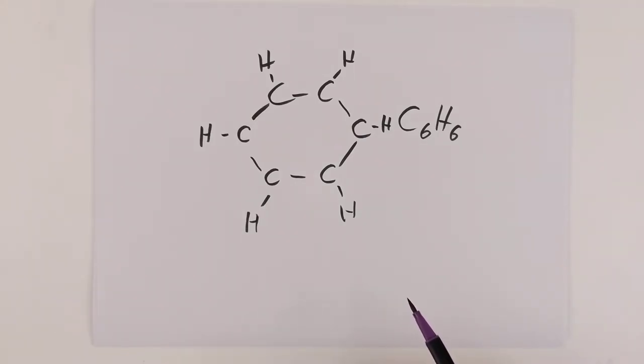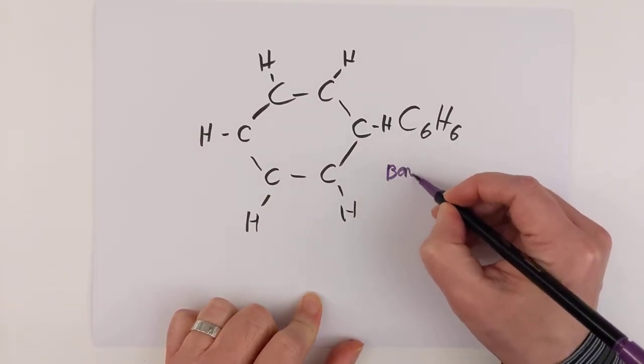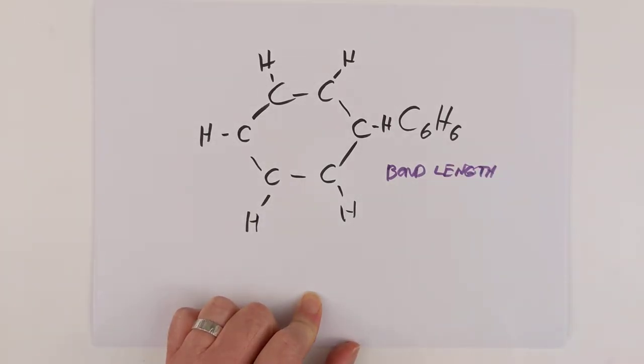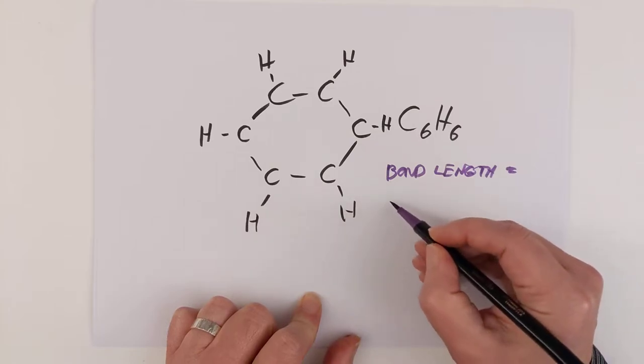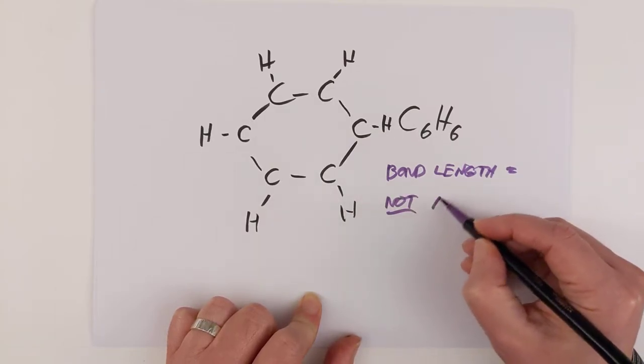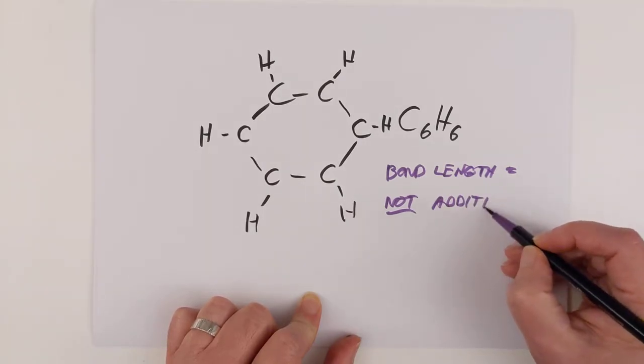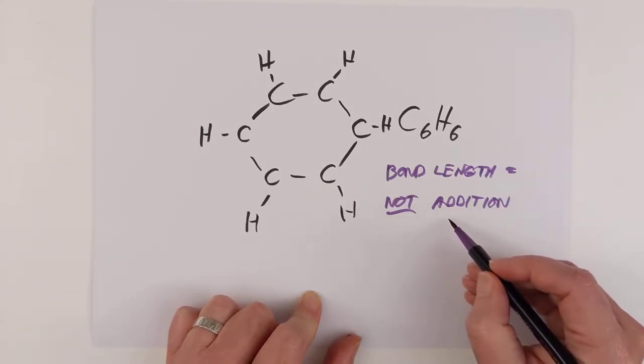Cyclohexatriene would have alternating double and single bonds, which are different lengths to each other. Single bonds are longer than double bonds. So, this is evidence that it's not cyclohexatriene. Other evidence is to do with the fact that if it did have three double bonds, identical bond lengths. Bond lengths equal.